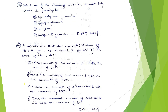The next question: which of the following is not an inclusion body found in prokaryotes? The options are cyanophycean granule, glycogen granule, polysome, and phosphate granule. The correct answer is polysome. Polysomes are linear organizations of multiple ribosomes and are not classified as inclusion bodies.